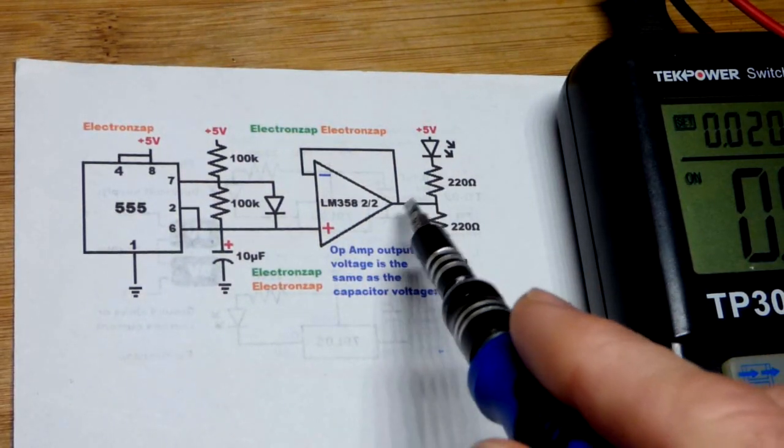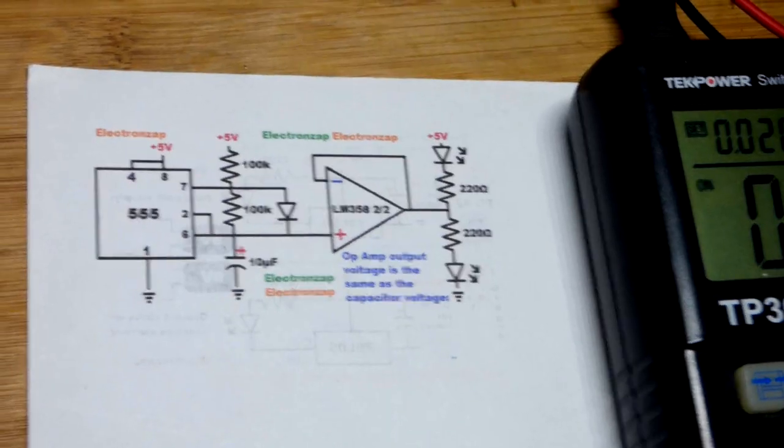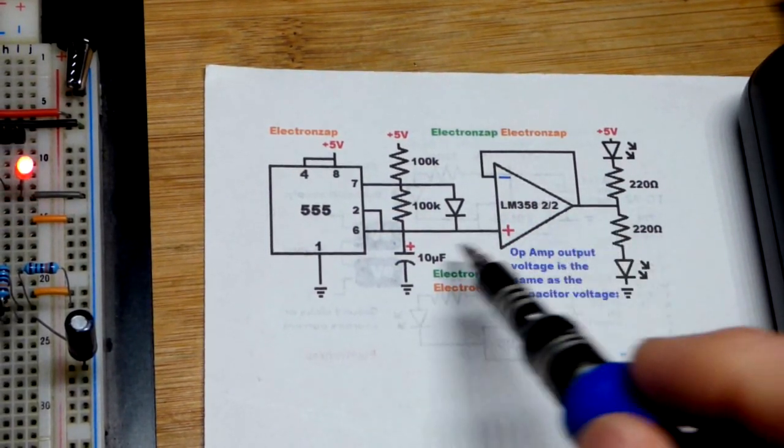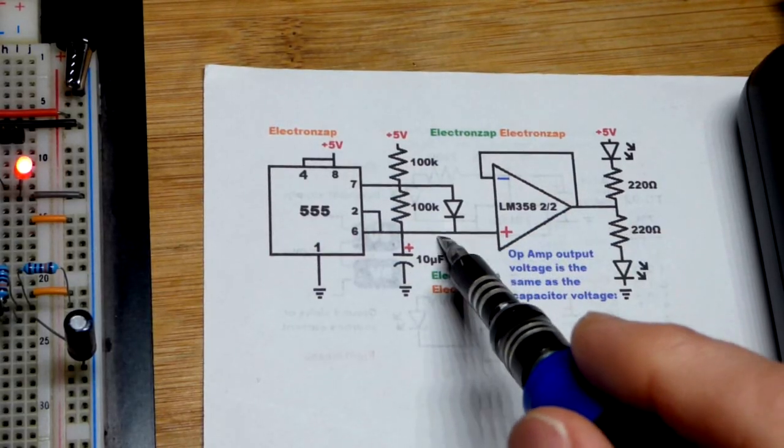You can see that. This is wired as a voltage follower. It takes a voltage input to the plus input and transfers that voltage out, basic voltage follower stuff.